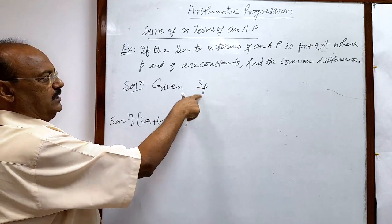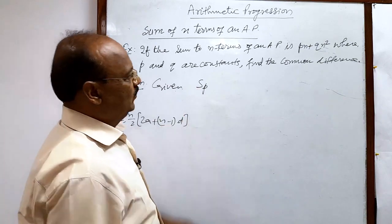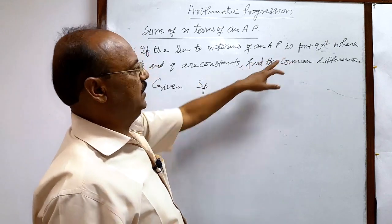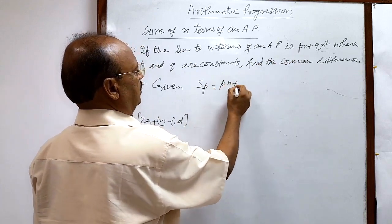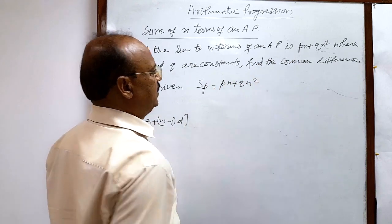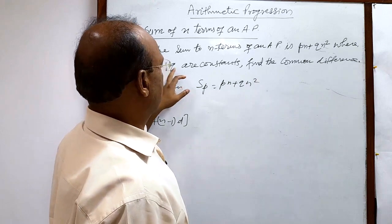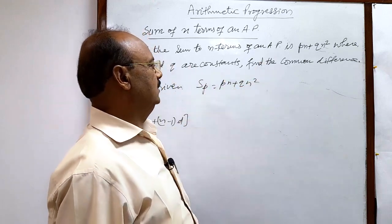So sum of n terms is Sn, and this is given: Sn is pn plus qn square. This is pn plus qn square where p and q are constants, find the common difference.